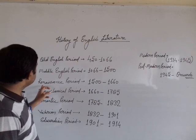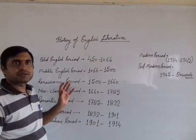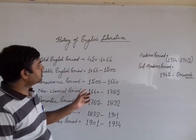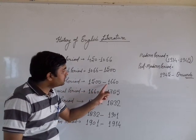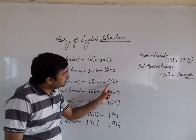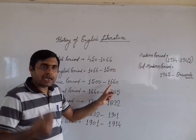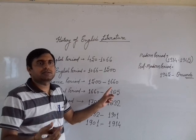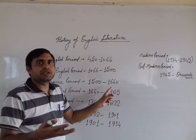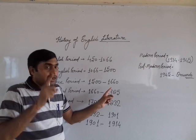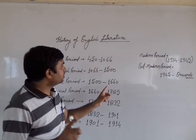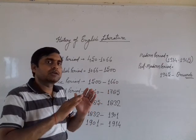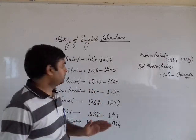Third is the Renaissance Period, which is a very important period in the history of English Literature according to M.H. Abrams — 1500 to 1600. In many books, you will see different dates about this period, but I just want to tell you that all the dates here are from M.H. Abrams, so you can completely believe in them.